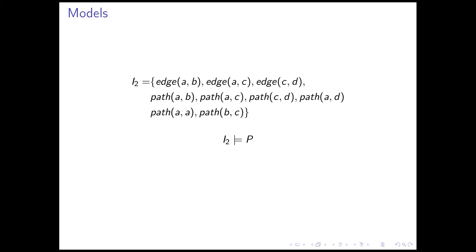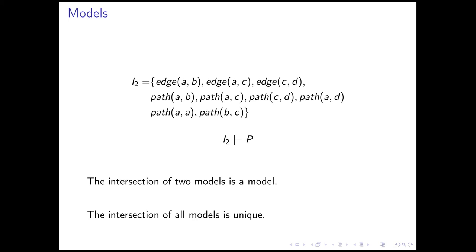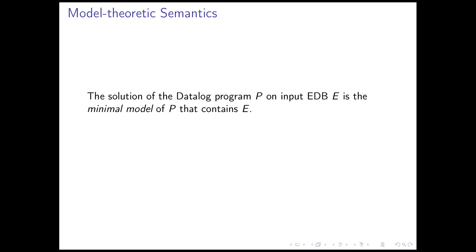For example, I2 is also a model of P. It contains all the literals which appear in I1, but it also includes some superfluous ground literals like path AA, which we would not have expected to be in our solution to the Datalog program. Still, I2 satisfies all the formulas that define P. This sounds like trouble — there is not a single model for a Datalog program. How do we choose which model is the solution we are looking for?